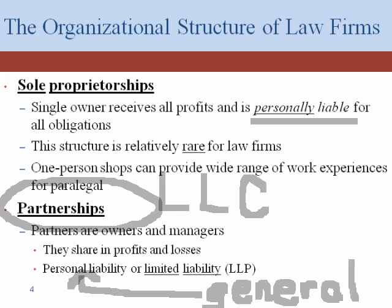There's another type of partnership called a limited liability partnership, or LLP. In this mechanism, there are more formalities that the partnership has to undergo — it does involve some legal paperwork filing and things along those lines. But the big benefit is that the partners no longer have their personal assets in jeopardy if the partnership goes south.